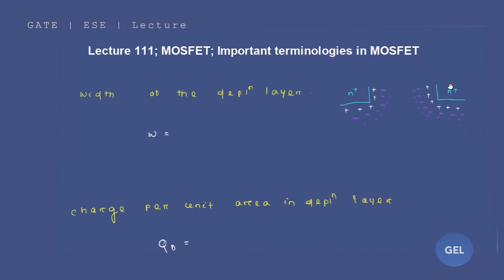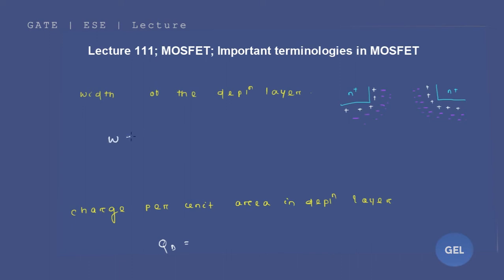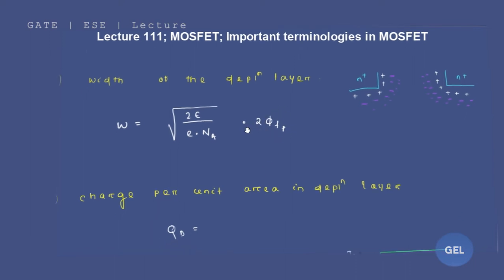You have N-plus and N-plus regions, and here you have a P substrate. So there must be a depletion region which will form between these two types. The width of the depletion layer is given as W = √(2εφ / (q · NA)) · √(2φFp). The work function depends on the depletion layer along with the acceptor impurity. The P substrate may have NA.